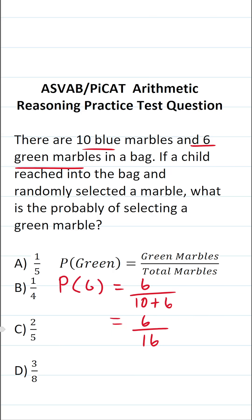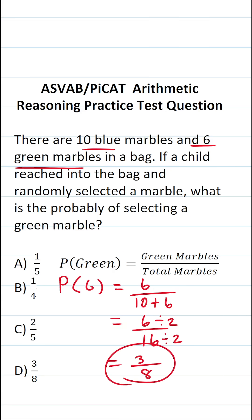Now, of course, this isn't an answer choice because we can reduce this fraction by a common factor of 2. More specifically, 6 divided by 2 is 3, and 16 divided by 2 is 8. So the probability of selecting a green marble in this case is 3 eighths.